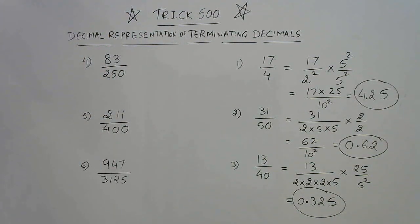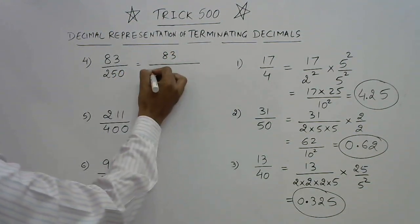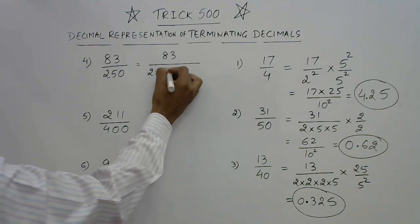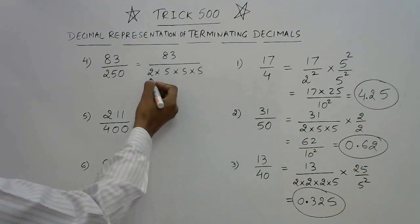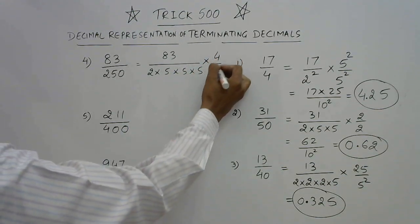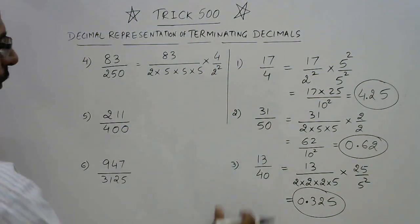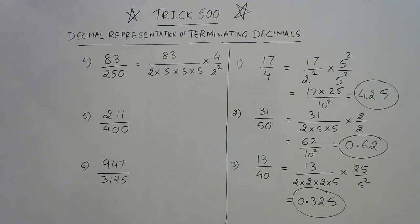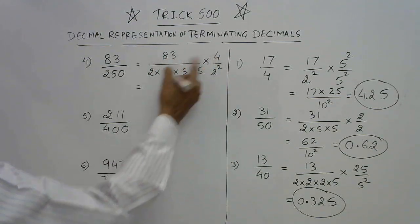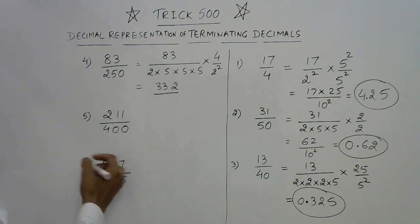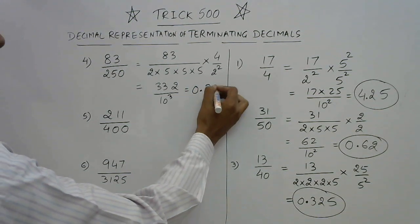Let us have some complicated examples. Here we have 83 upon 250. Let us make factors first: 2 into 125, so 5 into 5 into 5 is 125. What is the deficit? We have 3 fives and only 1 two, so we need 2 squared, that is 4, in the numerator and denominator. Once we have equated the number of factors, all we need to do is multiply the numerator: 2, 1 carry, 33. In the denominator we have 5 cubed and 2 cubed, that is 10 cubed, and so your answer is 0.332.